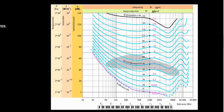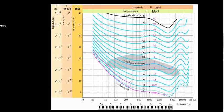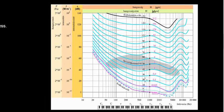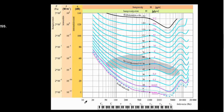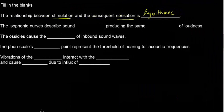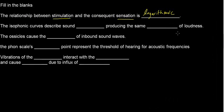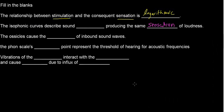If I jump to the next isophonic curve — the loudness level of 10-phon, or the first line — all the frequencies at their respective intensities are going to have 10-phon associated with them. So the isophonic curves describe sound producing the same sensation of loudness. Same sensation of loudness.